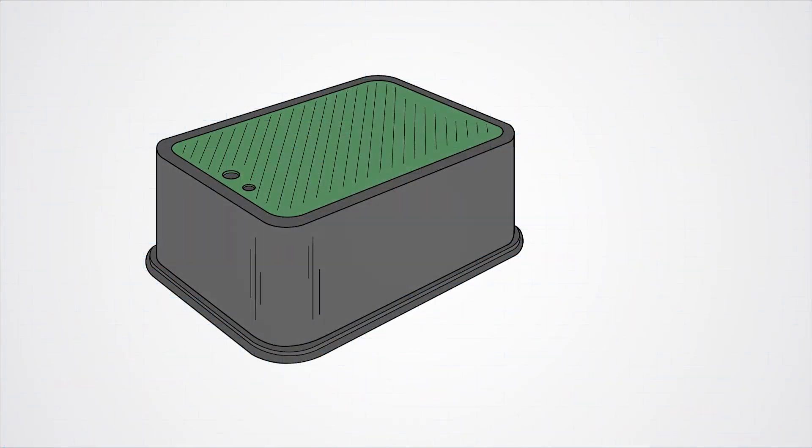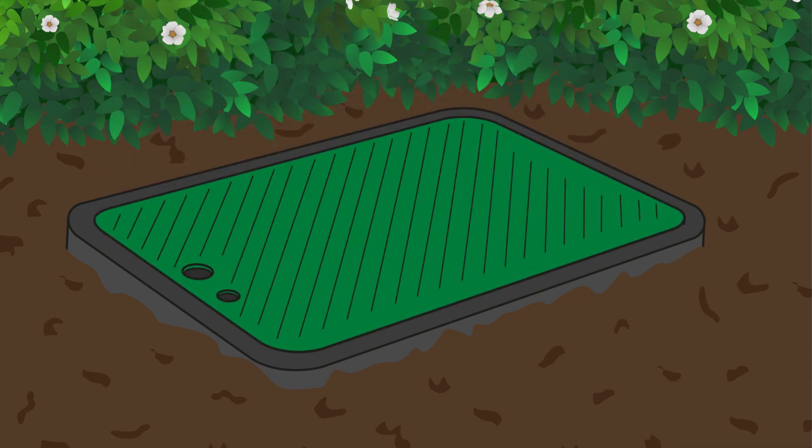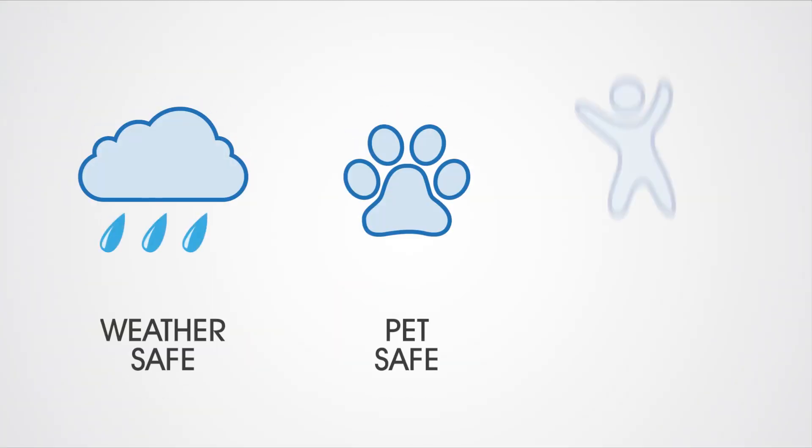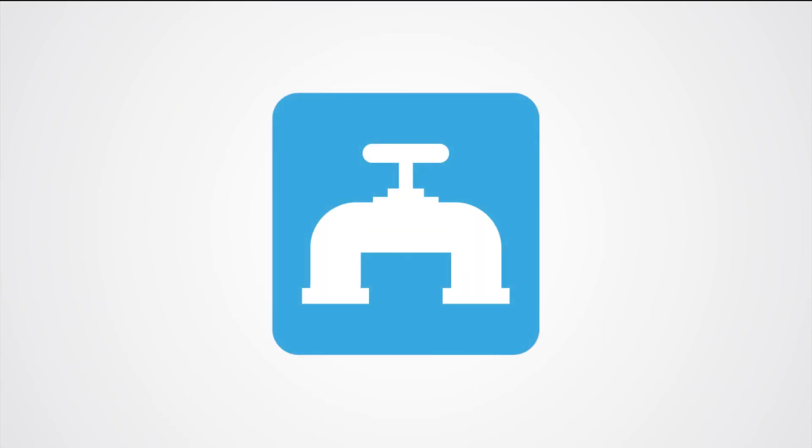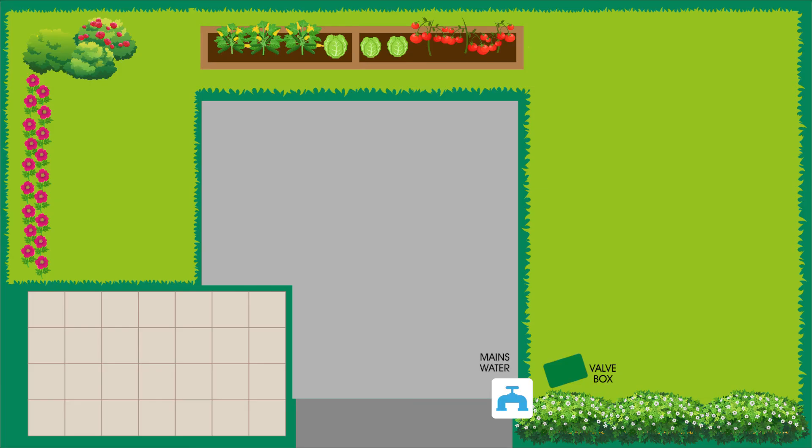To protect your automation system, cover it with a valve box. This keeps it safe from weather, pets and kids. Place your valve box somewhere with easy access to your main water source and near your irrigation system.